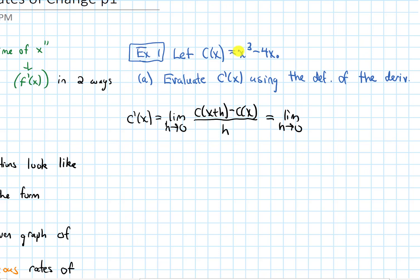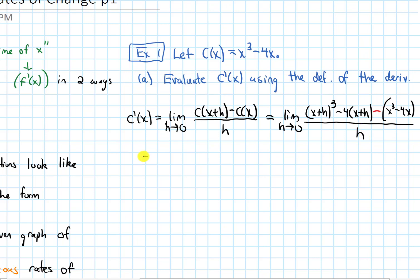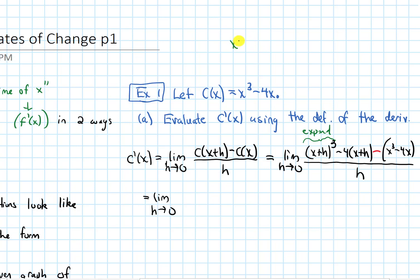Wherever the x is, I plug in x plus h, giving me x plus h cubed minus 4 times x plus h. Then we subtract c of x — I have to put parentheses around all of that: x cubed minus 4x — and distribute this negative sign. All of that is over h. With x plus h cubed, we expand by multiplying out. Skipping a couple of algebra steps, x plus h cubed expands to x cubed plus 3x squared h plus 3x h squared plus h cubed.